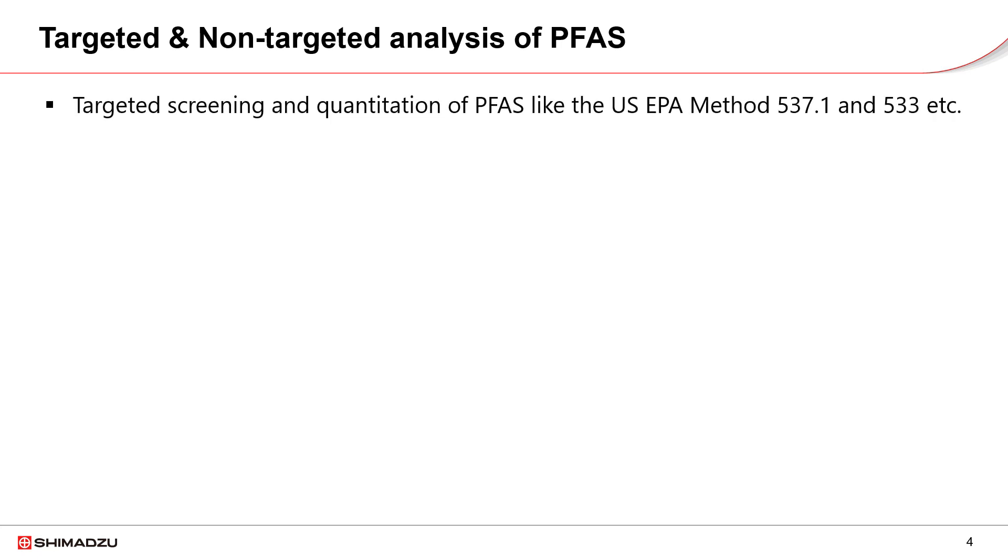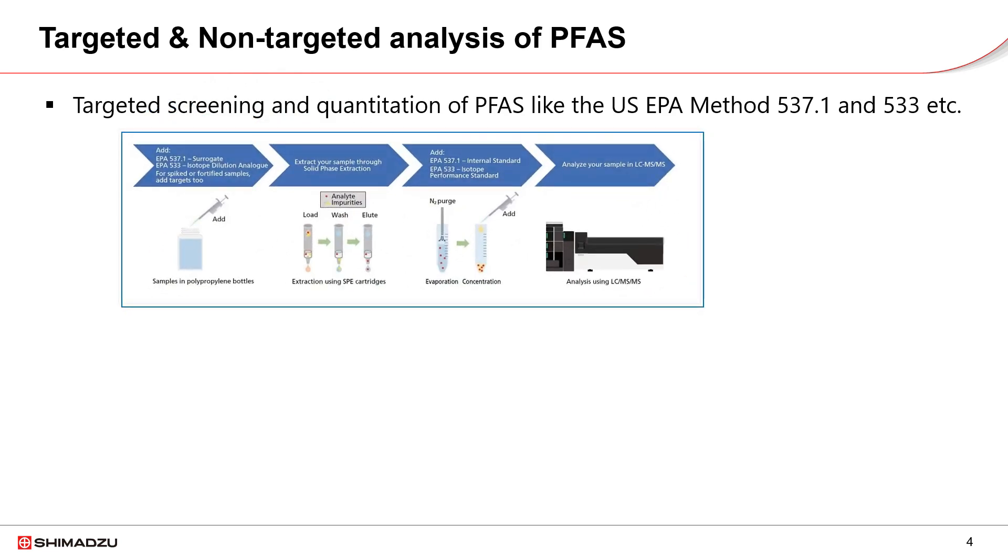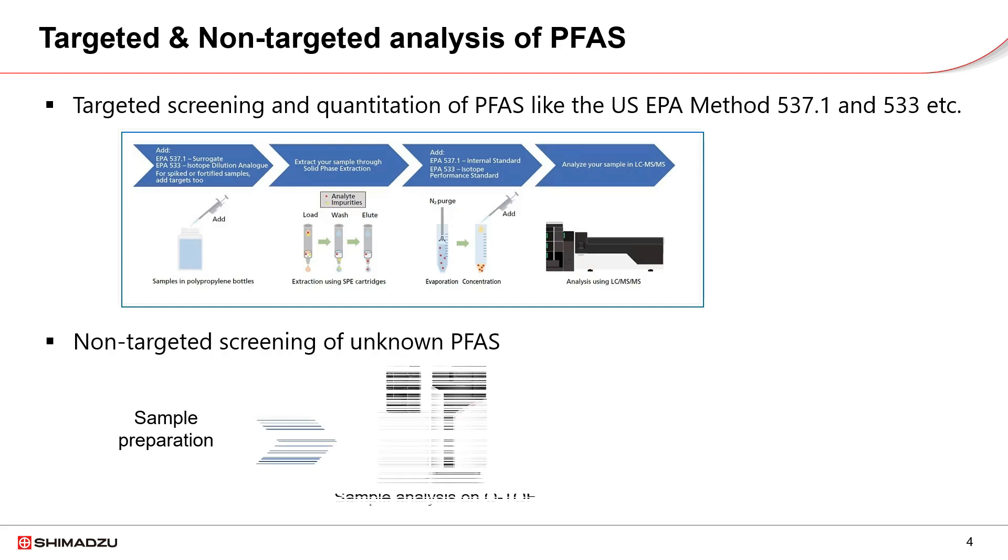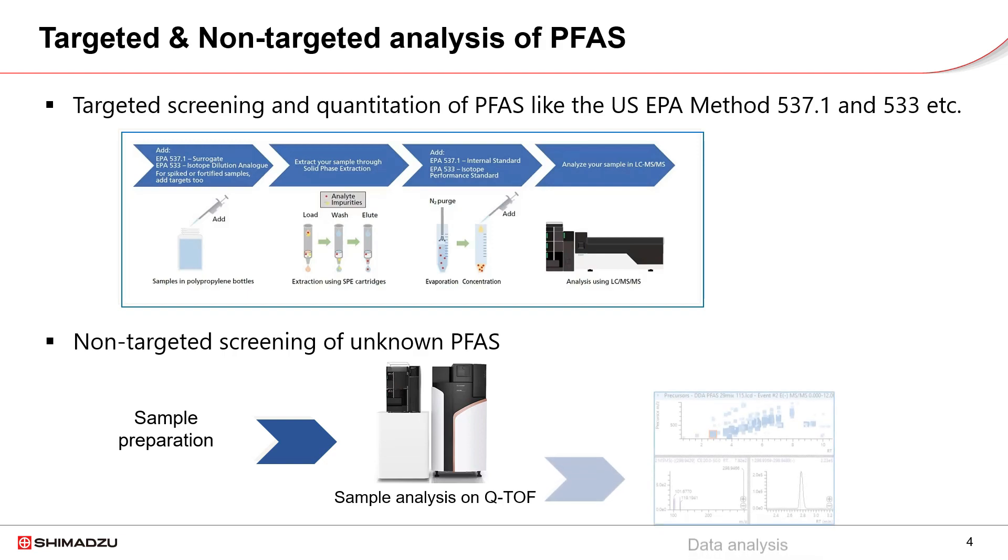Standard methods by the US EPA and other authorities are mostly targeted screening of PFAS, which employ MRM technique on triple-quadrupole LC-MS-MS system. Non-targeted screening is based on high-resolution accuracy mass like Q-TOF system for detection of unknown and suspected PFAS in sample.